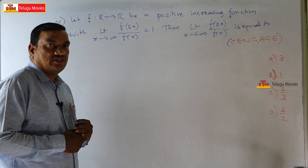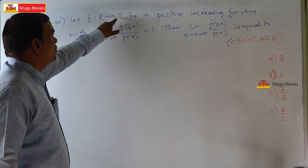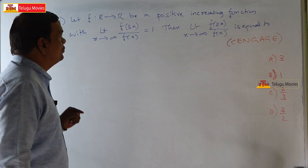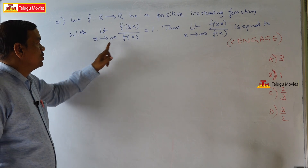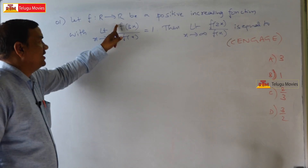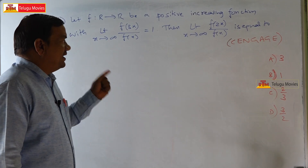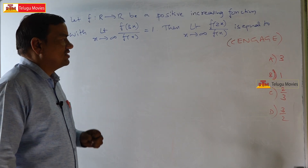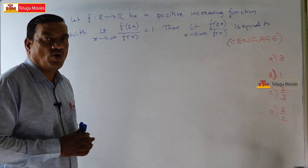The first problem for today's session is: let f from R to R be a positive increasing function with limit x tends to infinity of f(3x) upon f(x) equal to 1. Then find the limit x tends to infinity of f(2x) upon f(x). This is a very easy problem.